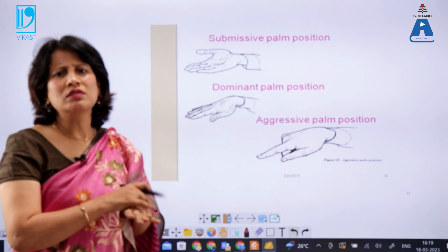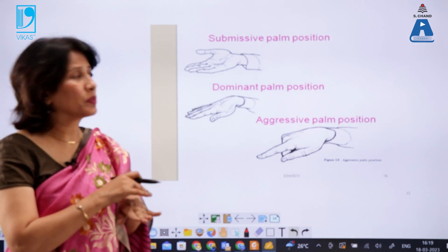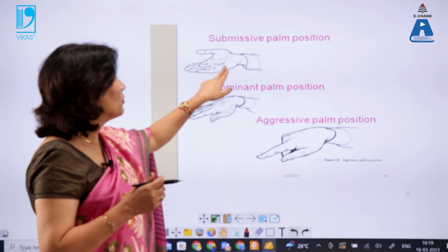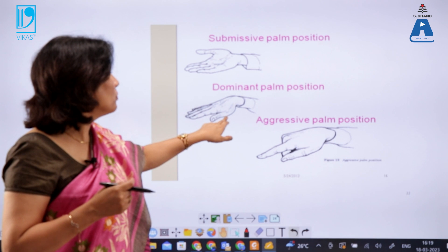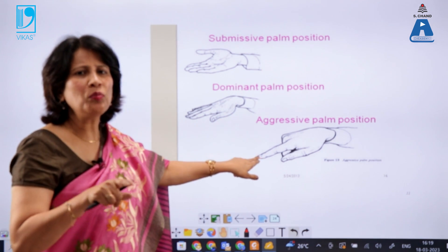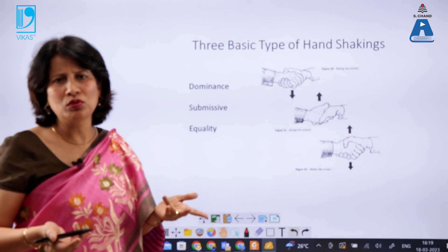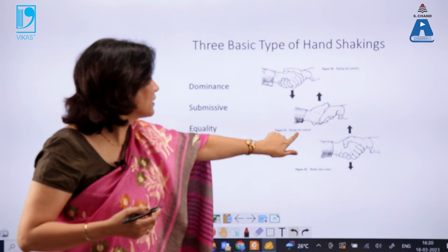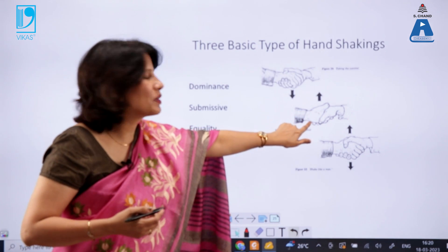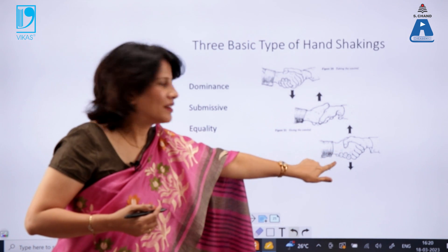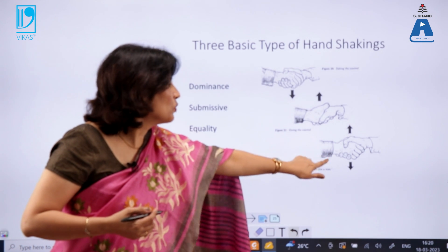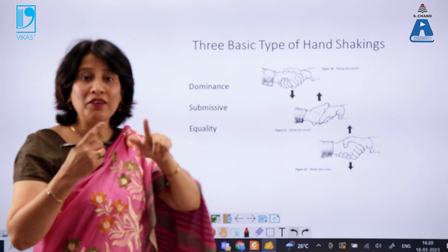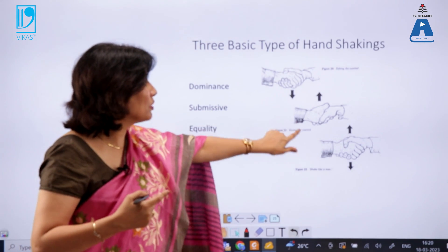Our palm positions convey a great deal about our personality. The first is the submissive palm position — I am ready to submit to the will of others. The dominant palm position shows dominance. The aggressive palm position involves pointing at others. Similarly, handshakes tell a lot about personality: one position shows dominance, the second gives control to the first person showing a submissive nature, and the third shows equality — both parties are equally important.